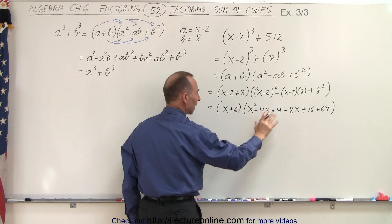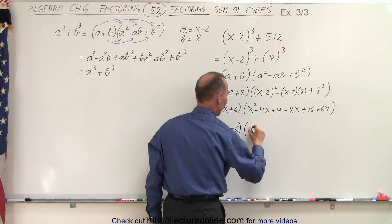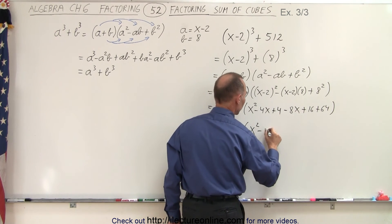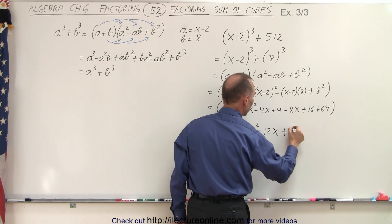And notice we can combine some like terms. So this is equal to (x+6) times (x² - 4x - 8x which is -12x, and 4+16 that's 20 plus 64 is +84).